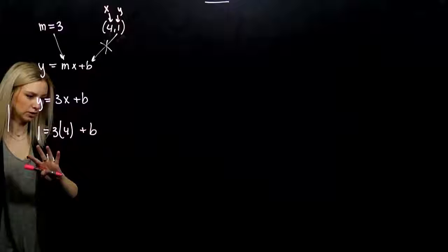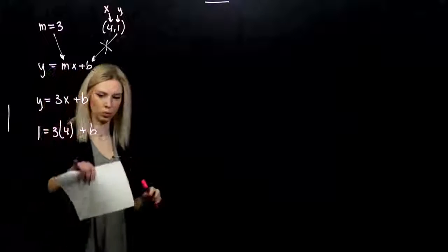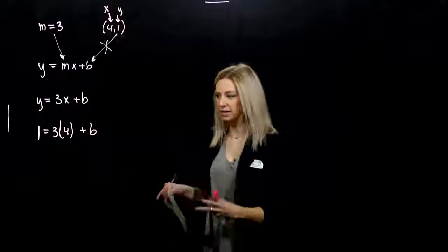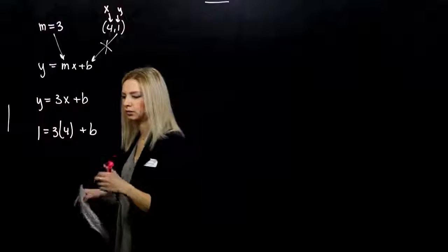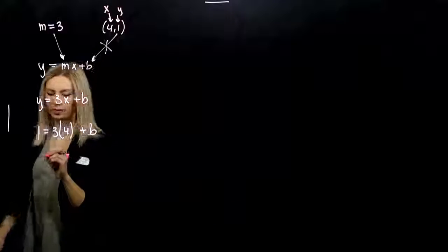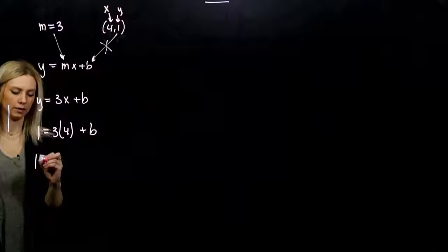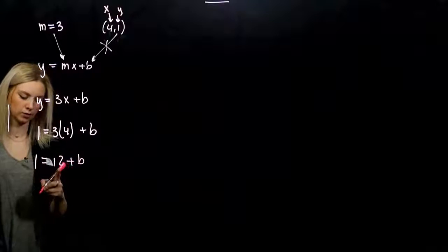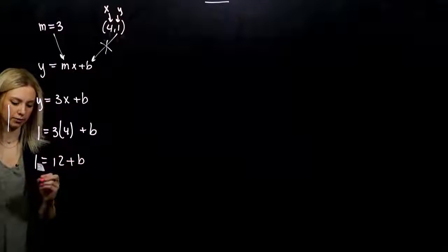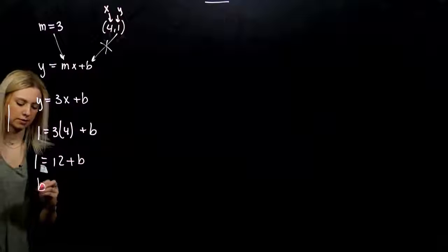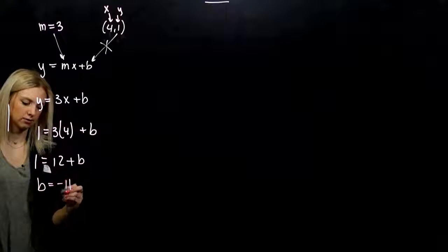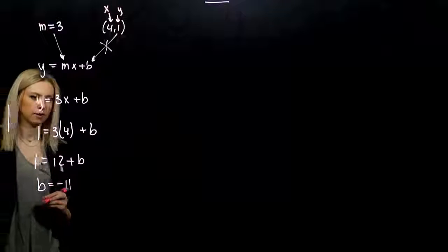It's an equation in one variable that we can solve for b. 1 is equal to 12 plus b, so I need to subtract 12 from both sides. b is equal to minus 11.